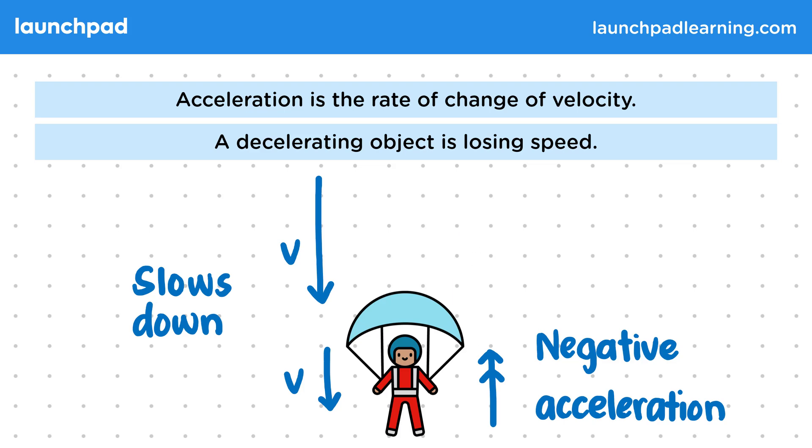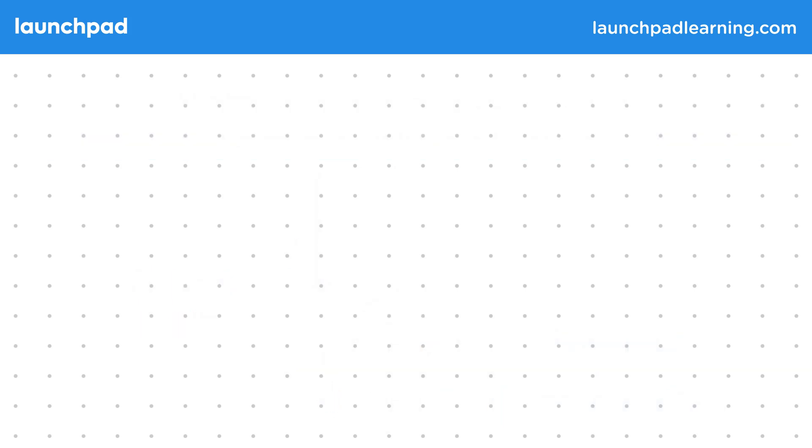So what if we have two objects that are accelerating? Will their velocities both change in the same way? Well, the greater the acceleration of an object, the faster it will gain speed.